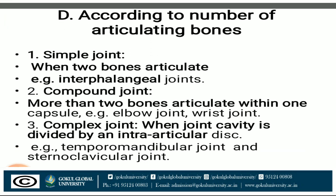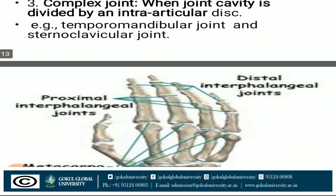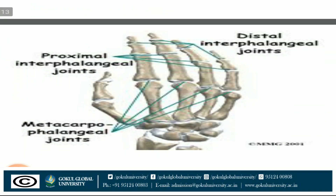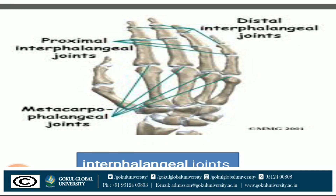Now, classification according to number of articulating bones. A simple joint, as the name suggests, is when two bones articulate with each other. An example is the interphalangeal joints, as shown in this diagram.